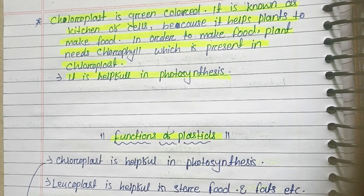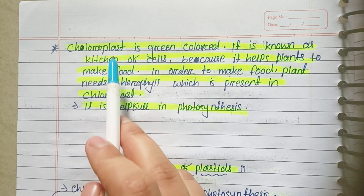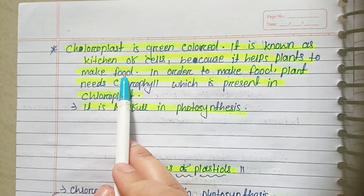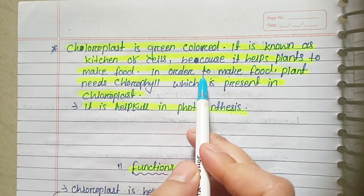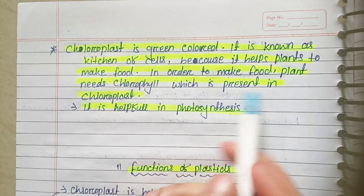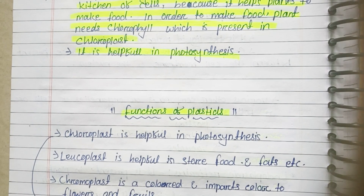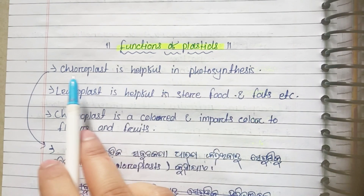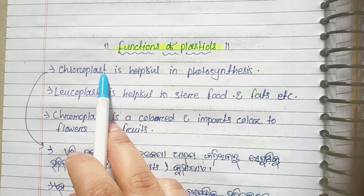I will tell you about all of them in notes. Chloroplast is green in color and is known as the kitchen of the cell, because it helps the plant to make food. Chloroplast is helpful in photosynthesis.